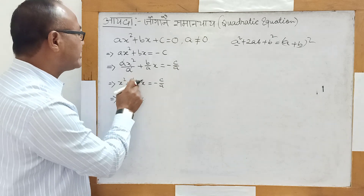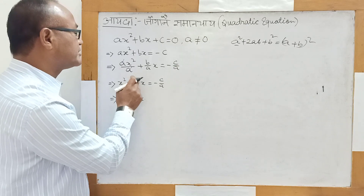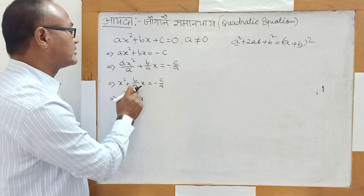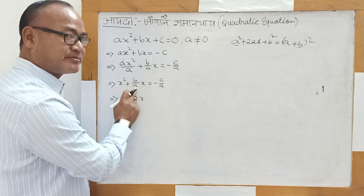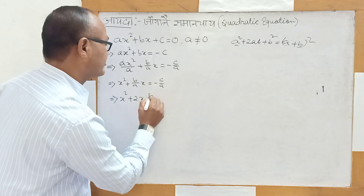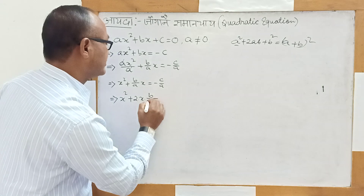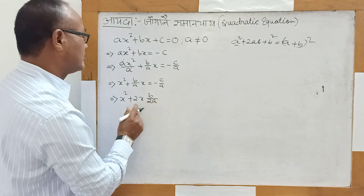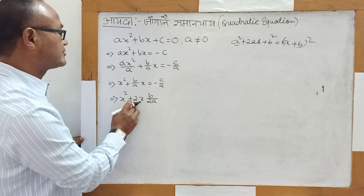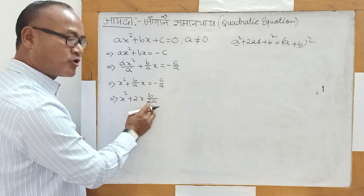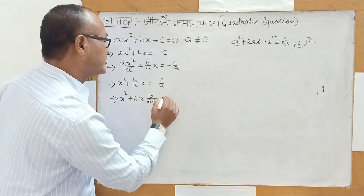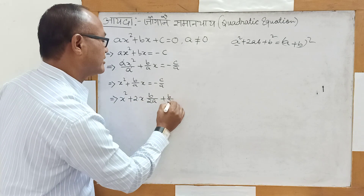Now we have x. The x is equal to 0. Remember, b is equal to 2. Then x squared plus 2x into d. Maybe d is equal to 0. Therefore, b is equal to 0.